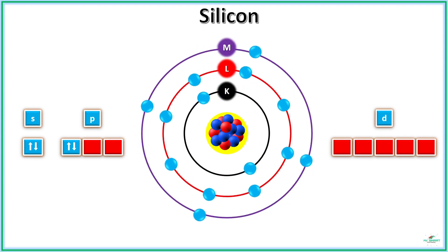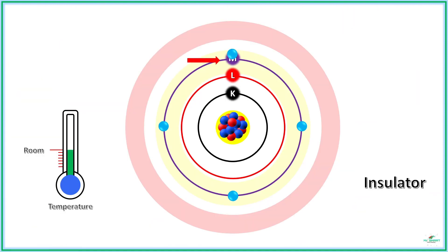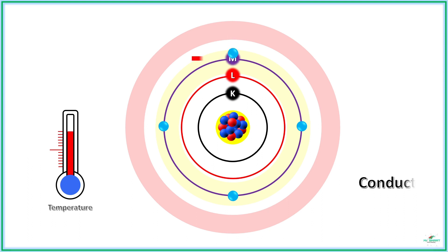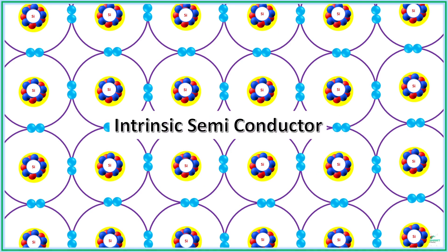A silicon atom has four electrons in its outermost shell. In a pure silicon molecule, these four electrons form a bond with neighboring atoms and all the electrons will be paired. At room temperature, when an external energy is given to the valence electron, they never excite to the conduction band and the material remains as an insulator. When the temperature is increased, these materials start conducting electricity, but the conductivity will not be similar to that of conductors. These types of pure semiconductors are called intrinsic semiconductors.